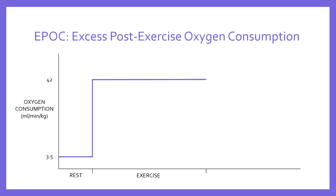Let's say we row for several minutes — six, seven, eight, nine, ten minutes — and then we stop. We get to the end of the row and the demand for oxygen, because we're sat still again, drops back down to resting levels. So during that recovery period, the demand for oxygen would be about 3.5 millilitres per minute per kilogram, or one MET. This is the theoretical scenario.